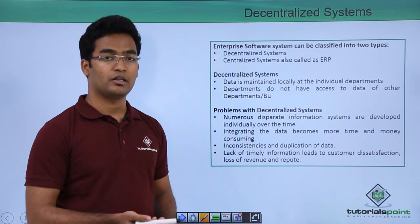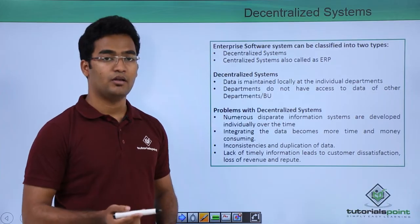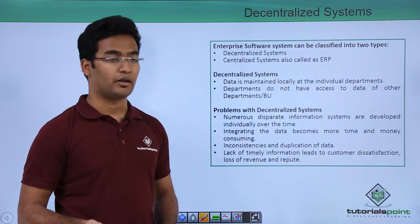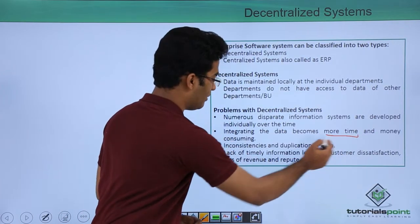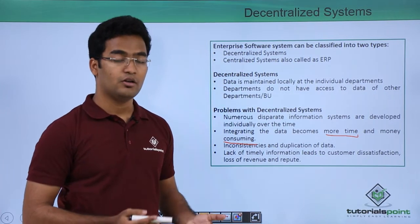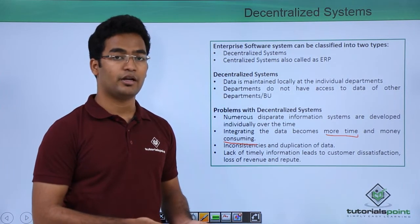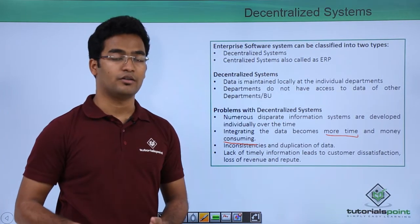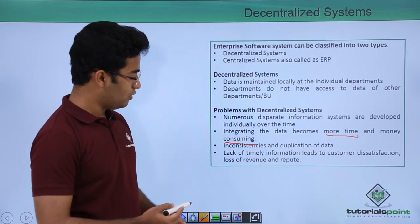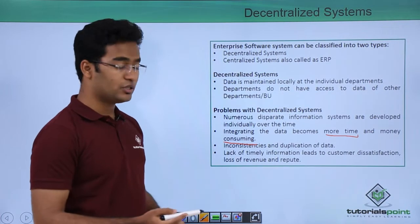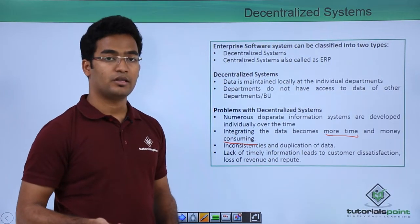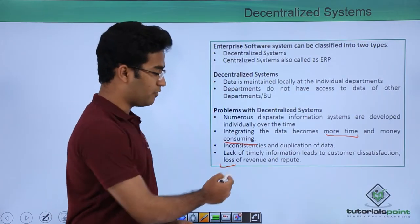For example, in the sales department some data was maintained, and similarly in the inventory department some data was maintained — so two databases had to be maintained. This created more time and cost overhead, and moreover there was duplication of data. The same data was being maintained in multiple databases, and there was a lack of timely information. This led to customer dissatisfaction and loss of revenue.